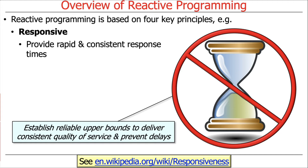The first principle is responsive. Responsiveness is intended to ensure a rapid and consistent response time for processing events coming into the system. The goal is to establish a reliable upper bound on how long it takes to process events, in order to deliver consistent quality of service and prevent undue delays. We don't want the dreaded hourglass or spinning wheel that indicates things are taking a long time to run.